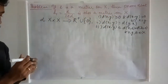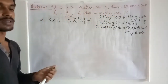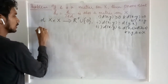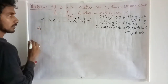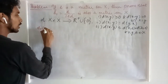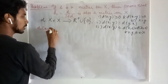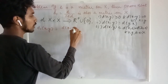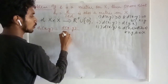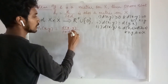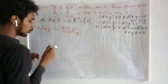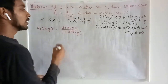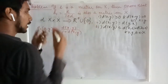This is the given information. With this, we are defining a new thing, that is D1, where D1(x,y) is going to be D(x,y) upon 1 plus D(x,y). We need to prove this is also a metric on X.